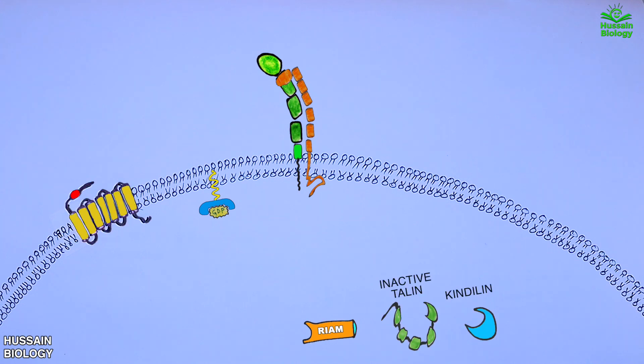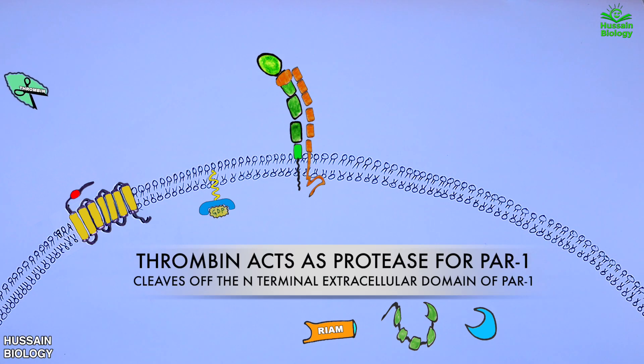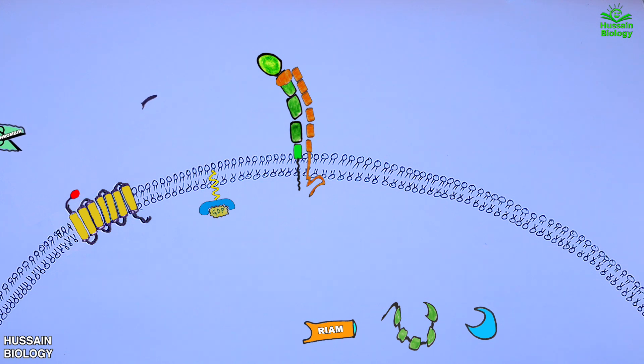From here we need to kick start the signaling pathway. First of all, it is the thrombin molecule which acts as a ligand for PAR1. Here in this animation we can see the thrombin molecule comes in and cleaves off the N-terminal domain of PAR1, which makes the receptor active.